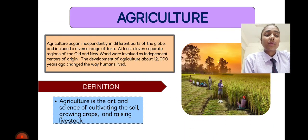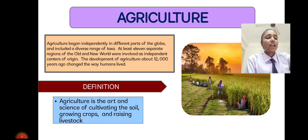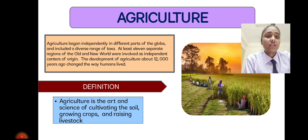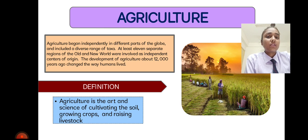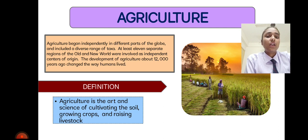The next slide is about agriculture. Agriculture is the branch that deals with cultivation and culture of plants. Agriculture began independently in different parts of the globe and included a diverse range. At least 11 separate regions of old and new worlds are involved as independent centers of origin. Now we will talk about the definition of agriculture.